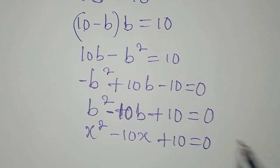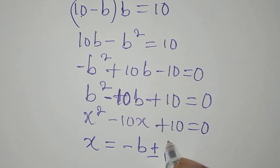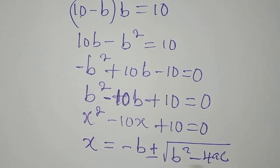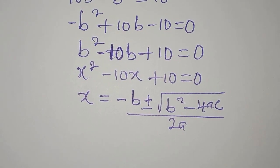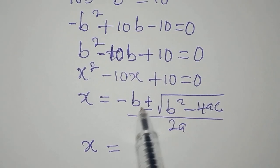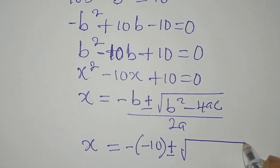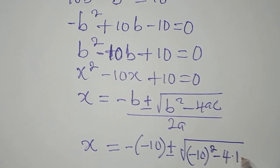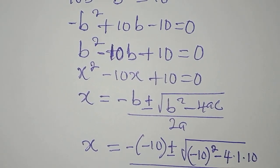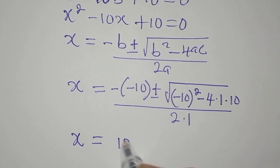The quadratic formula gives x = [-b ± √(b² - 4ac)] / (2a). Substituting the values where A = 1, B = -10, C = 10, we get x = [-(-10) ± √((-10)² - 4·1·10)] / (2·1), which simplifies to x = [10 ± √(100 - 40)] / 2.